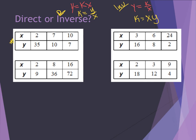Looking at the first table, I multiply x times y: 2 times 35 gives me 70, 7 times 10 gives 70, and 10 times 7 is also 70. So this one is inverse variation. For the next table, 3 times 16 gives 48, 6 times 8 is 48, and 24 times 2 is also 48. So that table is also inverse variation.